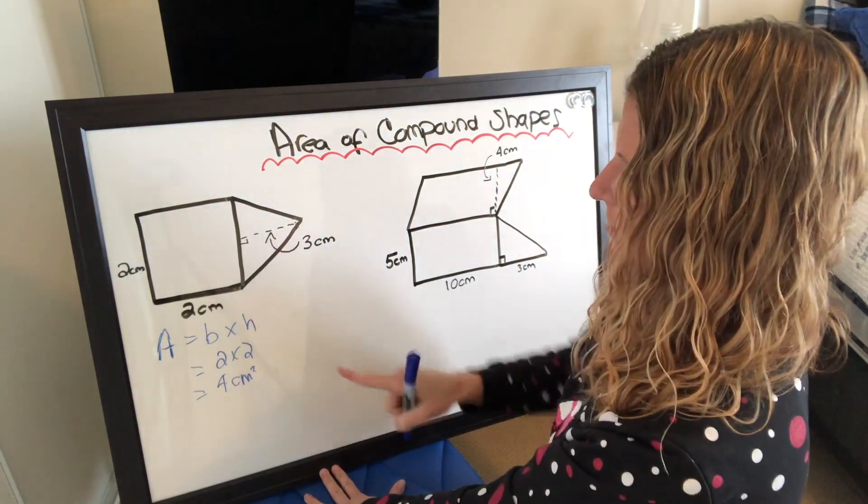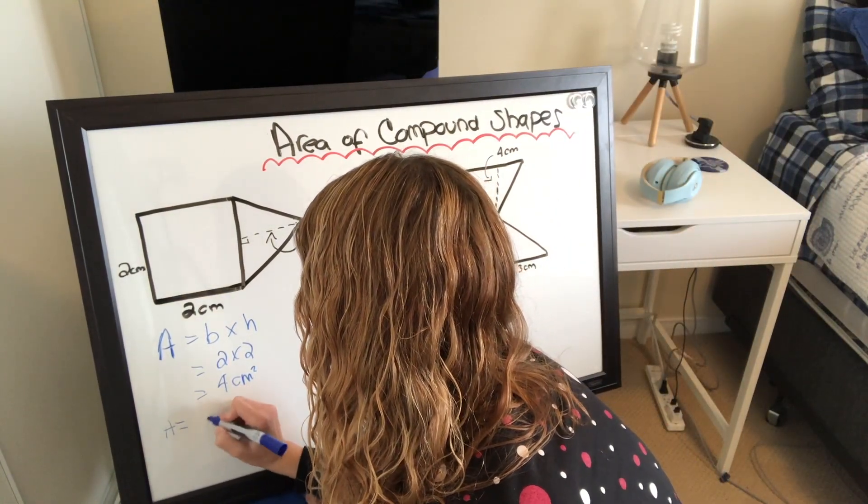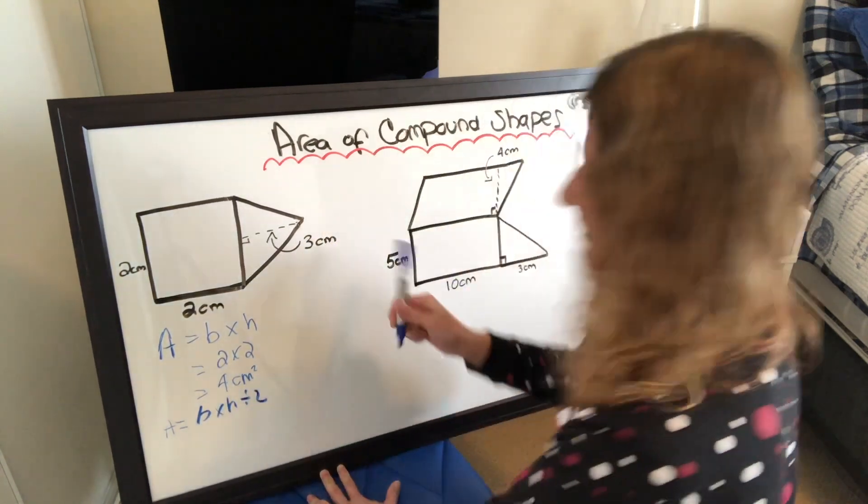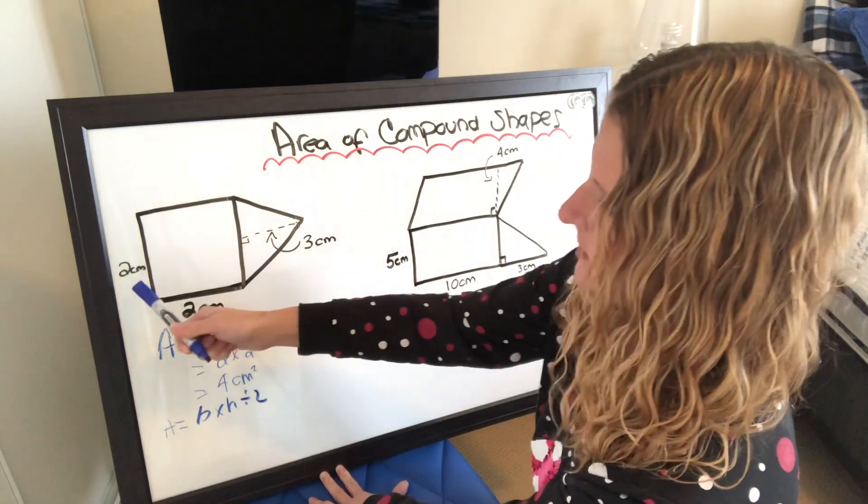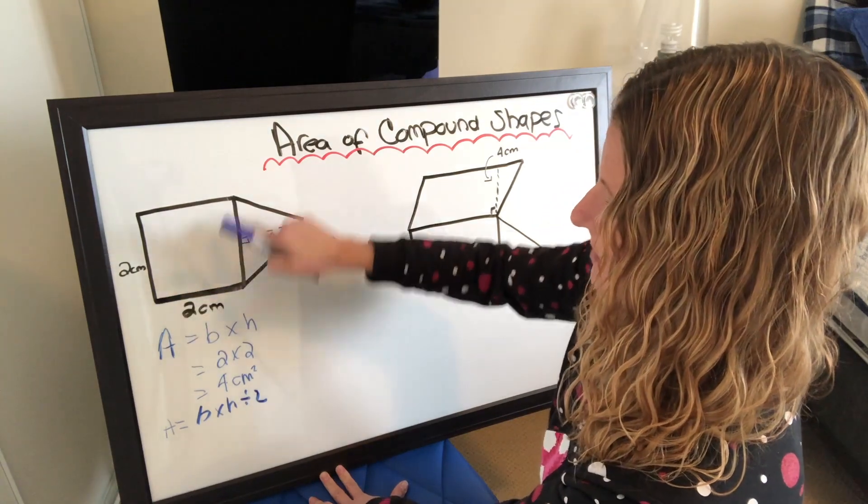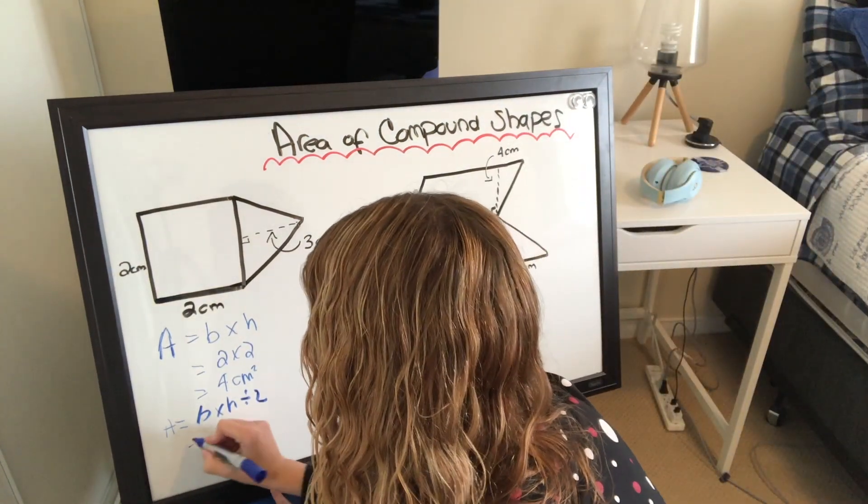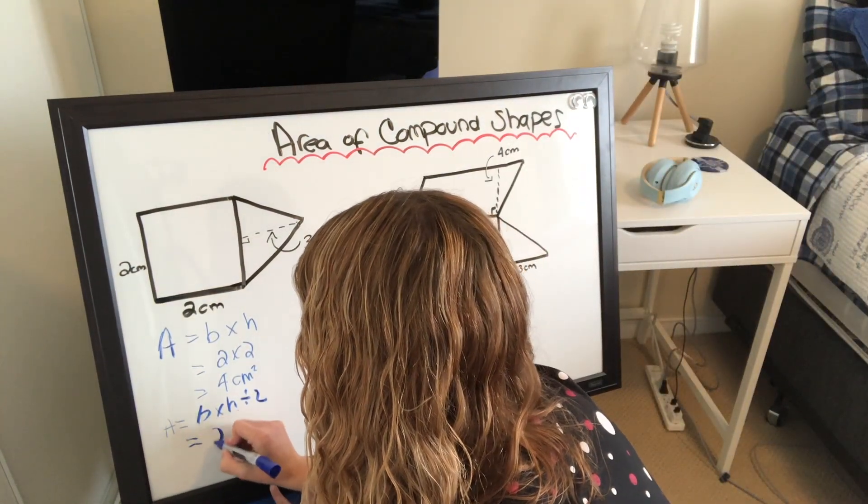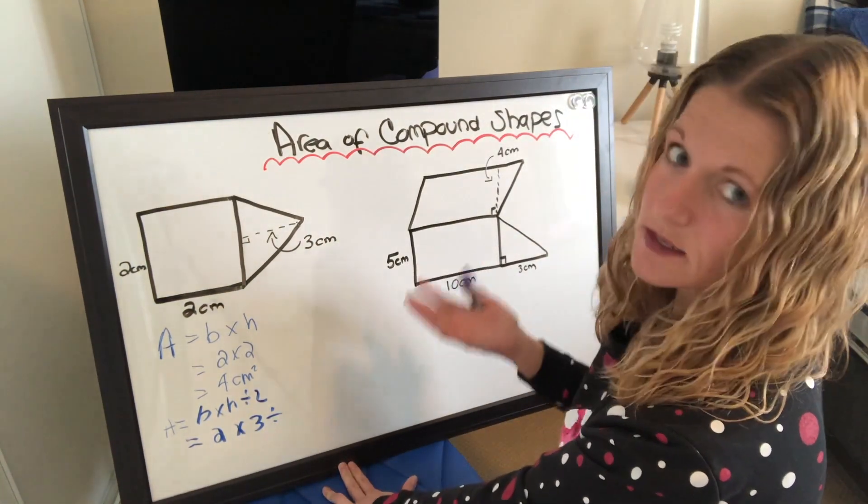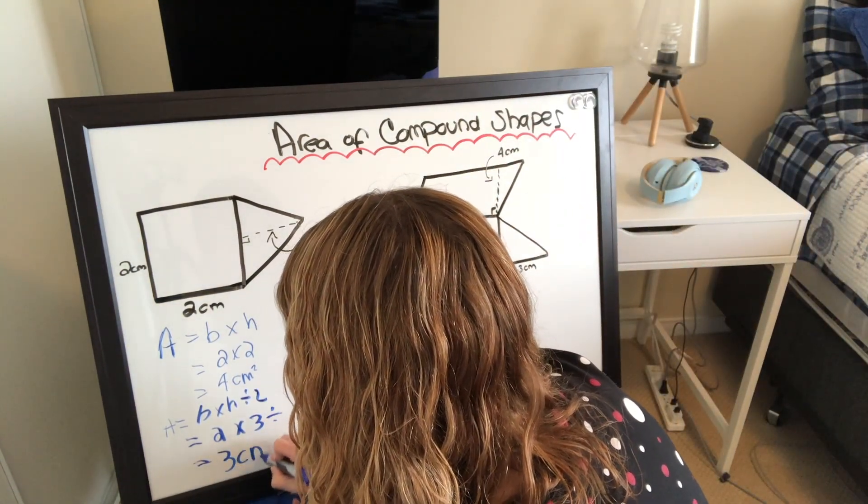So then we're going to do the triangle. So area equals base times height divided by 2. So the height is 3 centimeters. The base is 2 centimeters. And I know that because this side of the square is 2 centimeters. So I know that this side, because it is perpendicular, is also 2 centimeters. So we are going to go 2 times 3 divided by 2. So 2 times 3 is 6, divided by 2 is 3. So that is 3 centimeters squared.